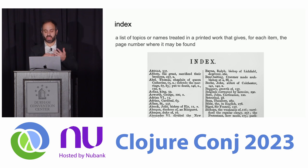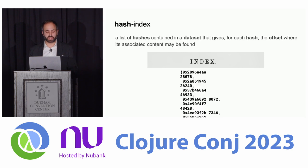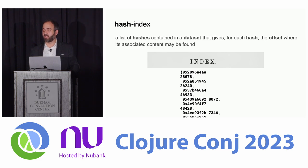But I said it was a hash index. What's a hash index? It's a list of hashes contained in a data set that gives, for each hash, the offset where its associated content may be found. So there are hashes that are associated with the locations of the juicy bits — the values that you're looking for. In most cases, these values are actual maps or values. The set case, the certificate revocation list, is a degenerate case — that's key to key.